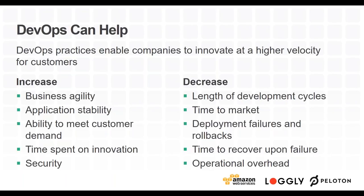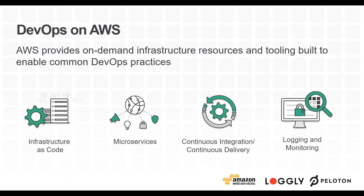You'll decrease time to market for new features, decrease deployment failures and rollbacks — which are generally the result of poor visibility that the feedback loop addresses — decrease your time to recover on failure, and reduce the operational overhead of managing your application infrastructure.